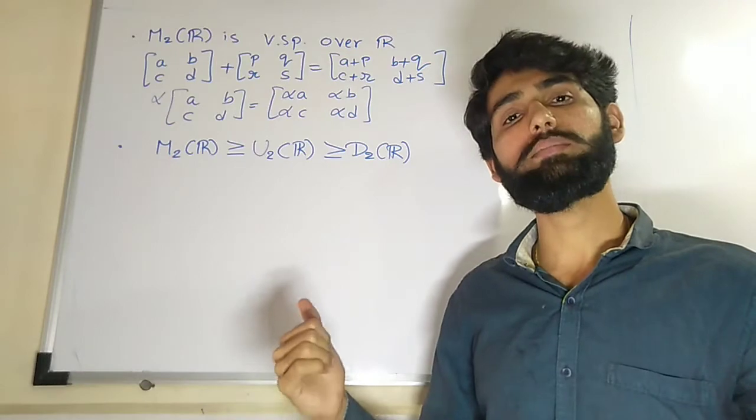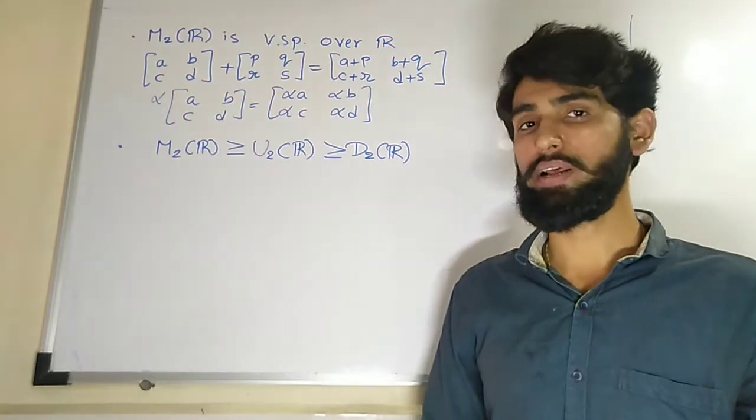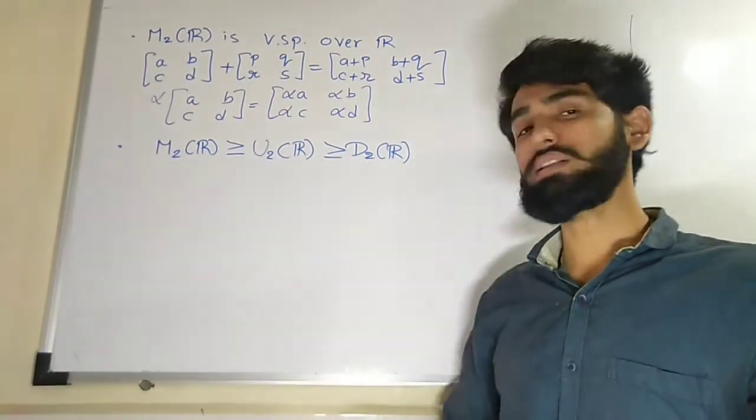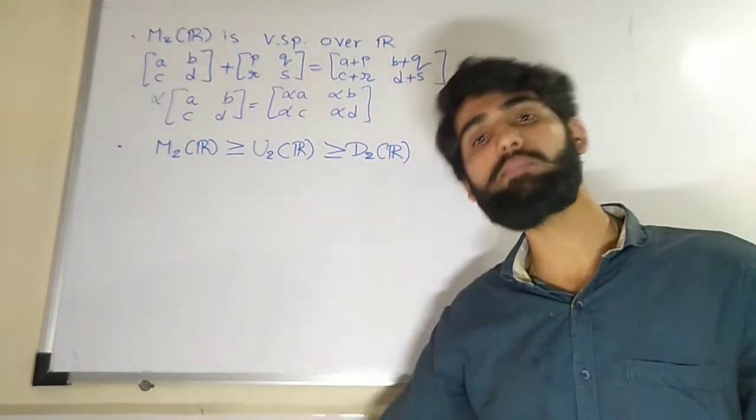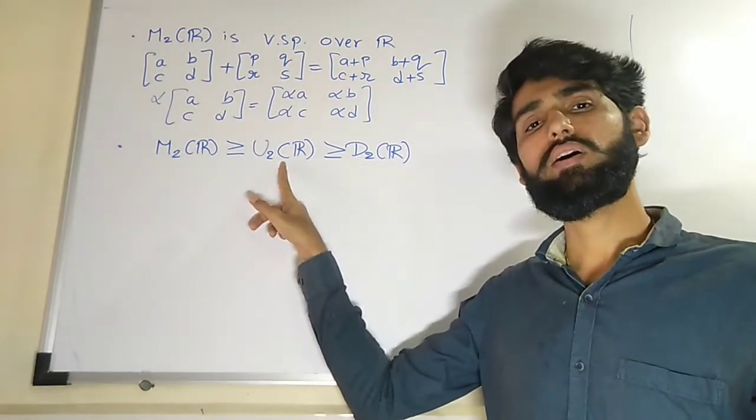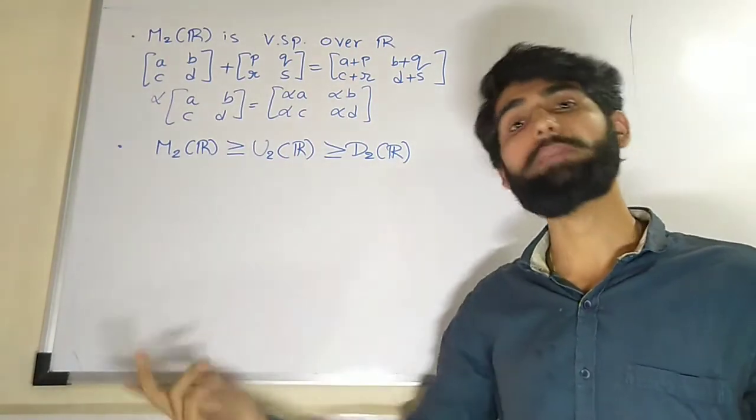U2R is nothing but set of all upper triangular matrices, and also in the last lecture we see that D2R, that means set of all diagonal matrices, is forming a subspace of U2R or you can say it is a subspace of M2R also.